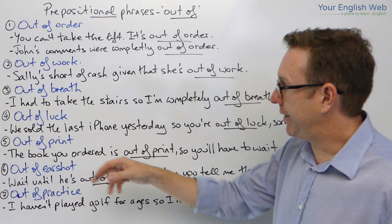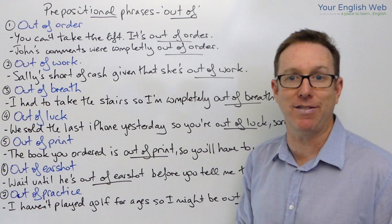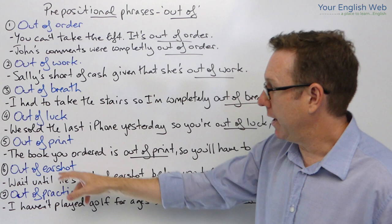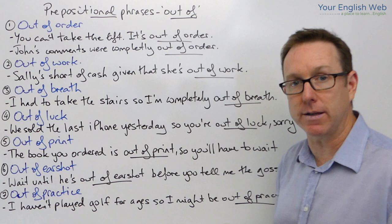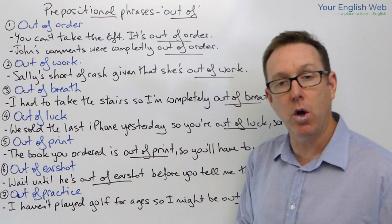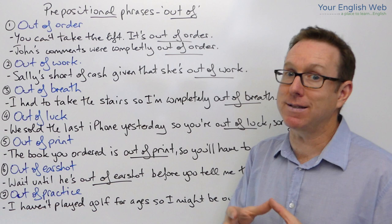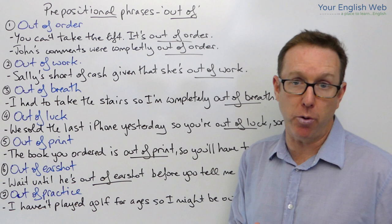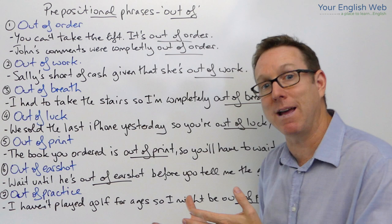The next one is 'out of print'. If a book or a magazine or something like that is out of print, it means that there are no available copies. For example: 'The book you ordered is out of print, so you'll have to wait.' There are no copies available in the bookstore. It could be a temporary thing — they're in between editions — or it could be permanent, meaning they're no longer printing that book.